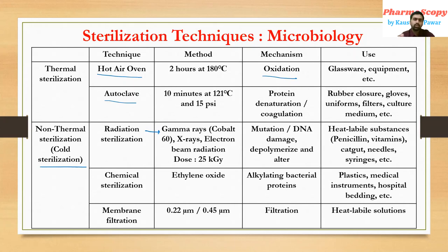Membrane filtration uses 0.22 micron and 0.45 micron filters. It acts by the filtration technique and is used for terminal sterilization — always remember membrane filtration is used for terminal sterilization, specifically for sterilizing heat-labile solutions.